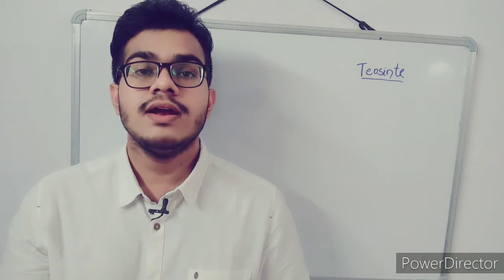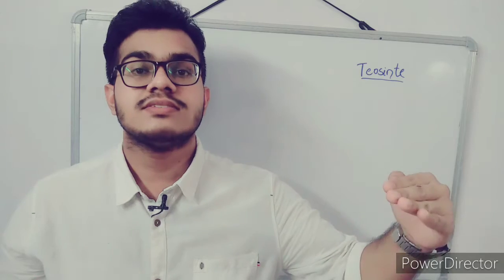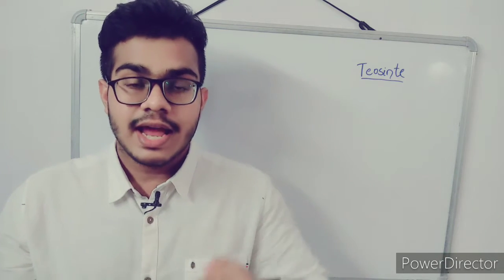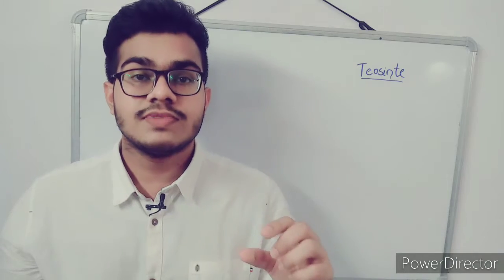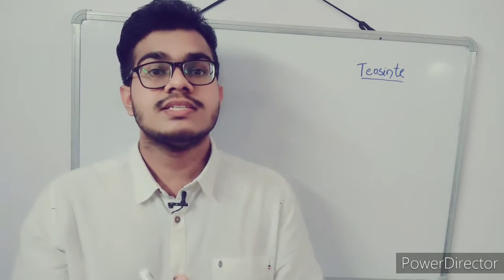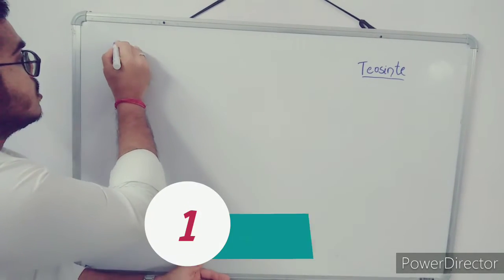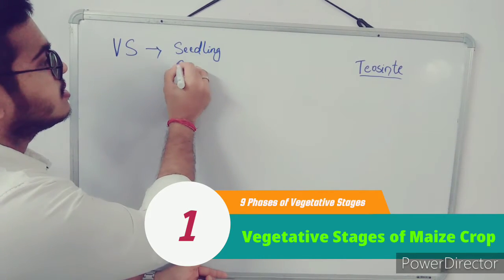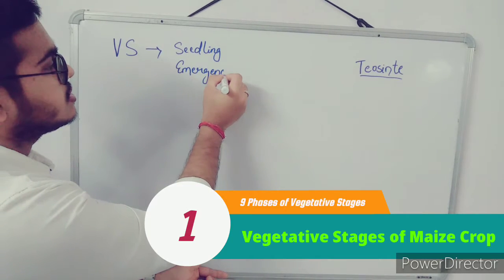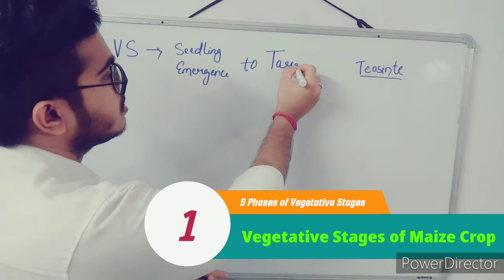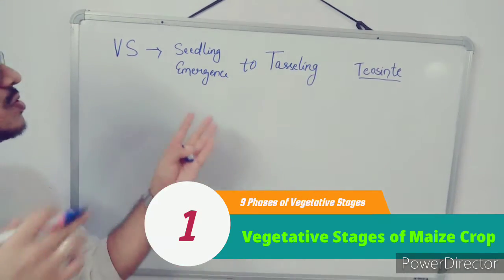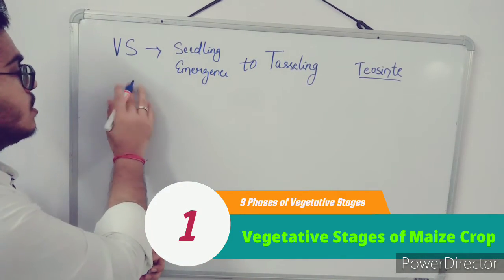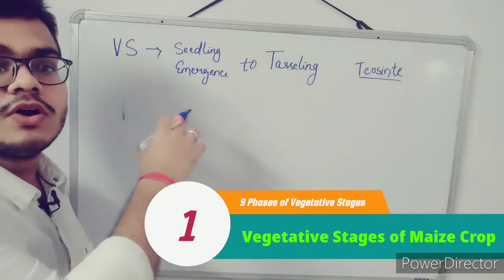When the seed is sown in the field, the plant's growth goes through nine vegetative stages before reaching the reproductive stage. The vegetative stage starts from seedling emergence and goes all the way to the tasseling stage. After the tasseling stage comes the reproductive stage.